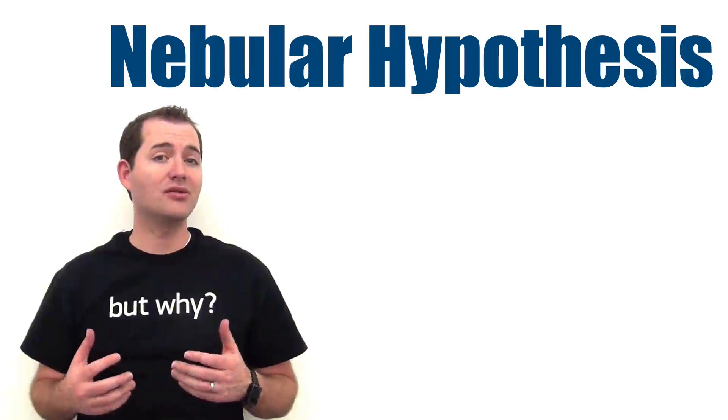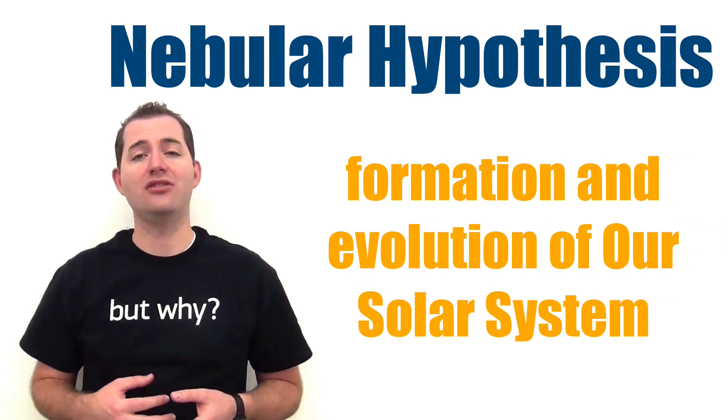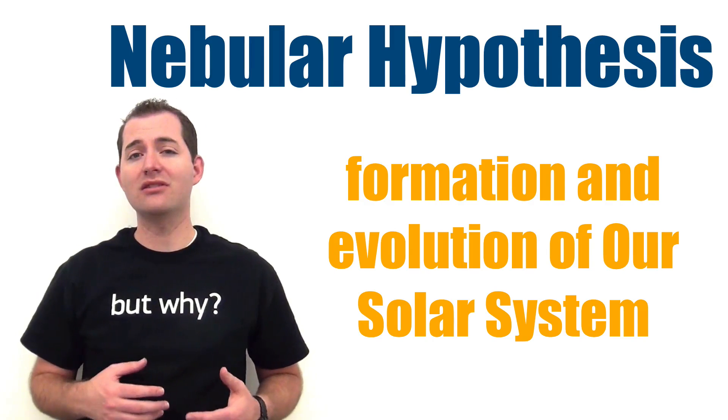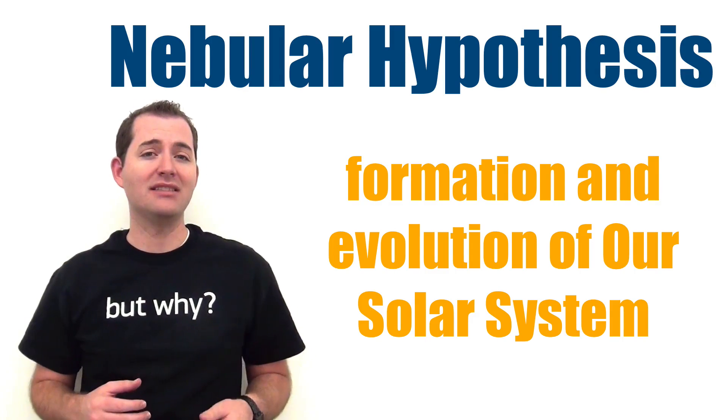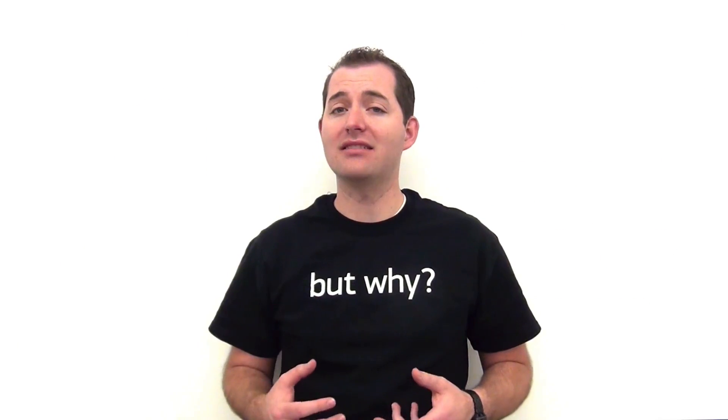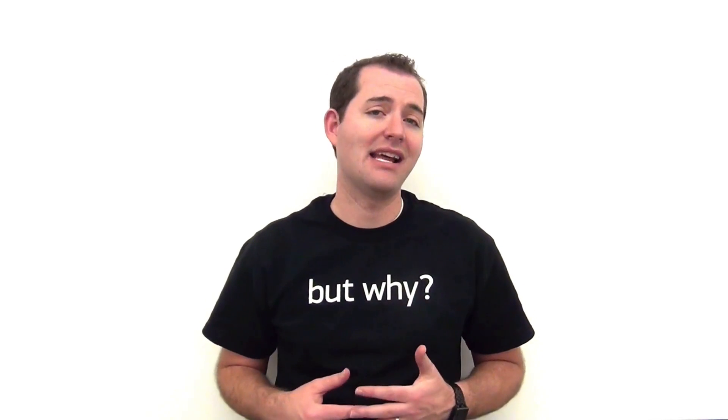The nebular hypothesis is the most widely accepted model to explain the formation and evolution of our solar system. Initially it was applied only to our solar system, but now it serves as the basis for planet and solar system formation throughout the entire universe. The nebular hypothesis describes all of the steps or processes that took place to form our solar system and the planets in it.